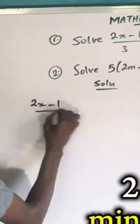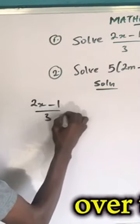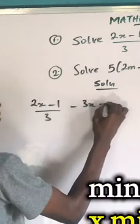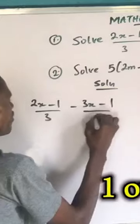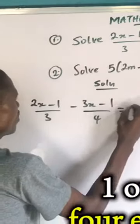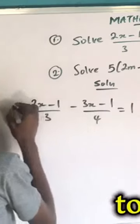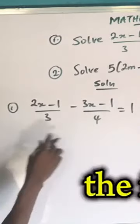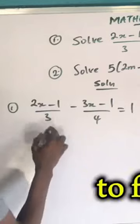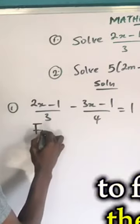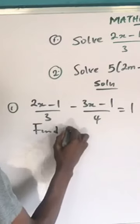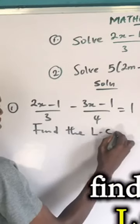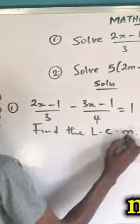x minus 1 over 3, minus 3x minus 1 over 4, equals 1. How do we go about this? The first thing is to find the LCM.